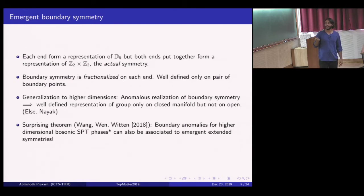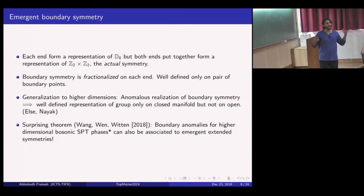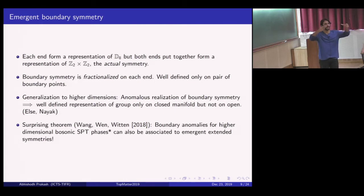To summarize: each end forms a representation of D8, but both ends together form a representation of Z2 × Z2. This is sometimes phrased as the boundary symmetry being fractionalized on each end, with the original global symmetry well-defined only for a pair of boundary points—and this generalizes to higher dimensions. As Dominic Else and Chetan Nayak argued, the symmetry is realized in a very anomalous way on the boundary: it is a well-defined representation of the original group only when you consider the boundary to be closed.